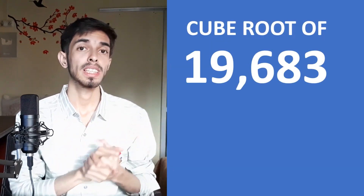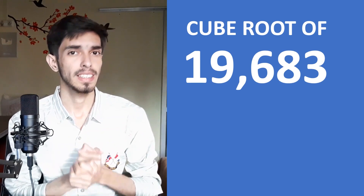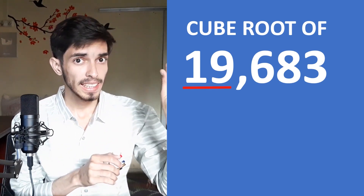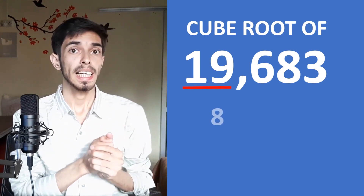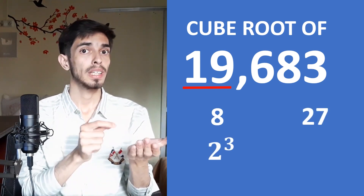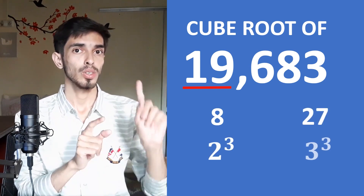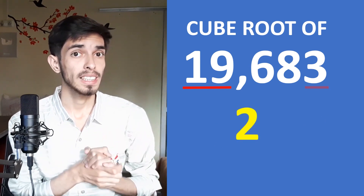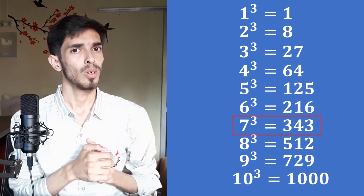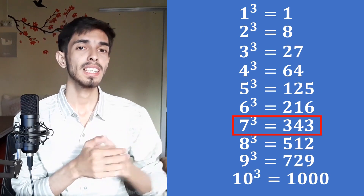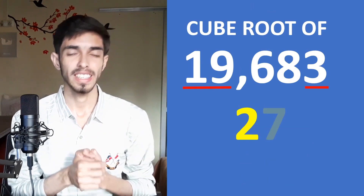Let's take another example: 19,683. The thousands part is 19; it lies between 8 and 27, which are 2³ and 3³, so the first digit is 2. This number ends in 3, and only 7³ ends in 3. So our answer is 27.